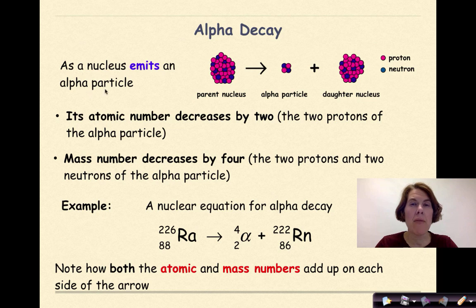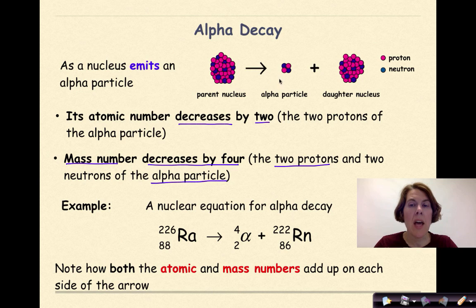Let's first talk about alpha decay. As a nucleus emits an alpha particle, its atomic number is going to decrease by two. In other words, two protons that were originally in our parent nucleus are now part of this released alpha particle. The mass number is also going to decrease by a total of four: two protons and two neutrons of the alpha particle. So here's my parent nucleus. When my parent nucleus undergoes alpha decay, an alpha particle is released and ultimately this daughter nucleus is going to lack two protons and two neutrons because those particles are found in this released alpha particle.